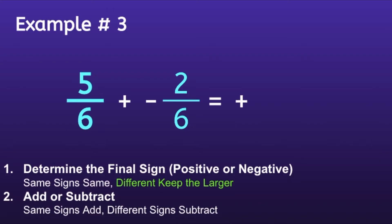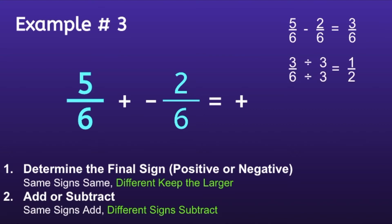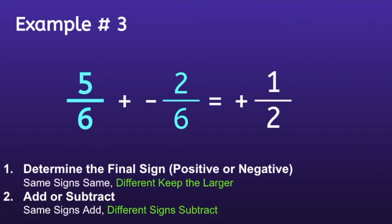Step two: Add or subtract. Since we have different signs, we will use 'different signs subtract.' And 5 sixths minus 2 sixths is equal to 3 sixths. But I can simplify that. What can I divide both 3 and 6 by? If you said 3, you're exactly correct. When I divide the numerator and denominator by 3, I'm left with the fraction 1 half. So the final answer will be 1 half.